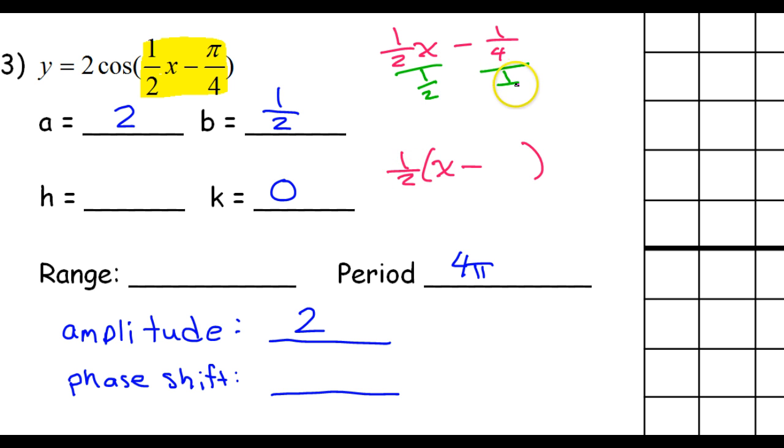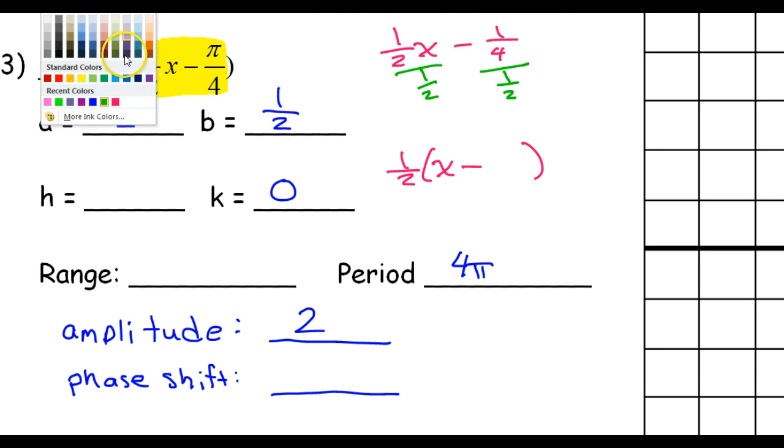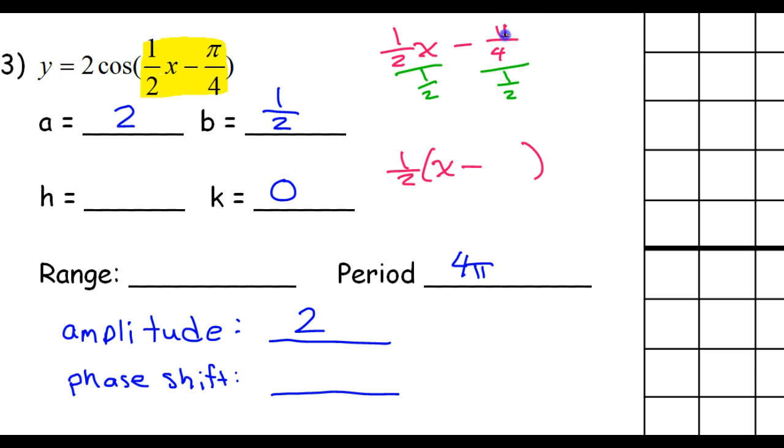So, I could divide both of these by 1 half. And this is π, not just 1 fourth. This is π over 4. These will cancel each other out. So, it's a matter of what's π over 4 divided by 1 half.